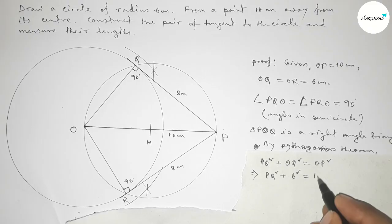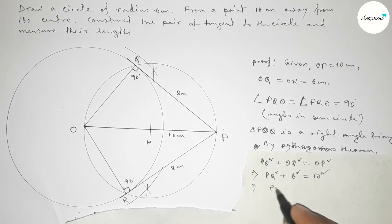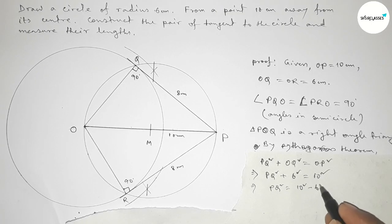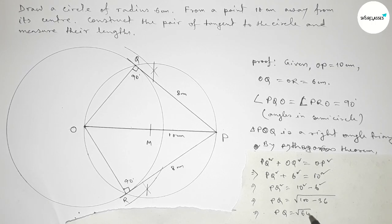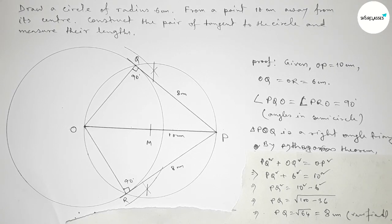So PQ² = 100 − 36 = 64, therefore PQ = √64 = 8 centimeters. This is verified. So the length of each tangent is 8 centimeters. That's all — thanks for watching. If this video is helpful to you, please share it with your friends. Thanks for watching.